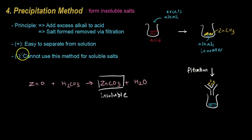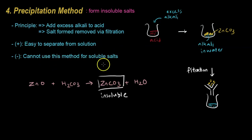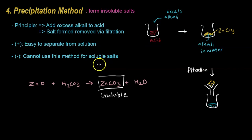The advantage of precipitation is that it's easy to separate the insoluble salt from the solution. The disadvantage is that you cannot use this method for soluble salts — there are only three ways for soluble salts: reacting metal with acid, reacting base with acid, and titration. And that is the end of the salt formation chapter.